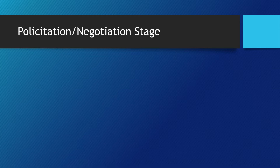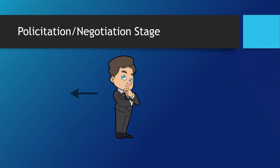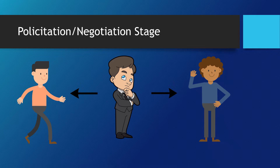This stage covers the doctrine of freedom to contract, which signifies that a person has the right to choose with whom to contract. This stage is formally initiated by an offer, which must be certain. For example, John offers to sell his house to Mark for $2.5 million, and then Mark negotiated for a lower price of $2 million. The lower price constitutes a counteroffer and is therefore not an acceptance of the offer of John.